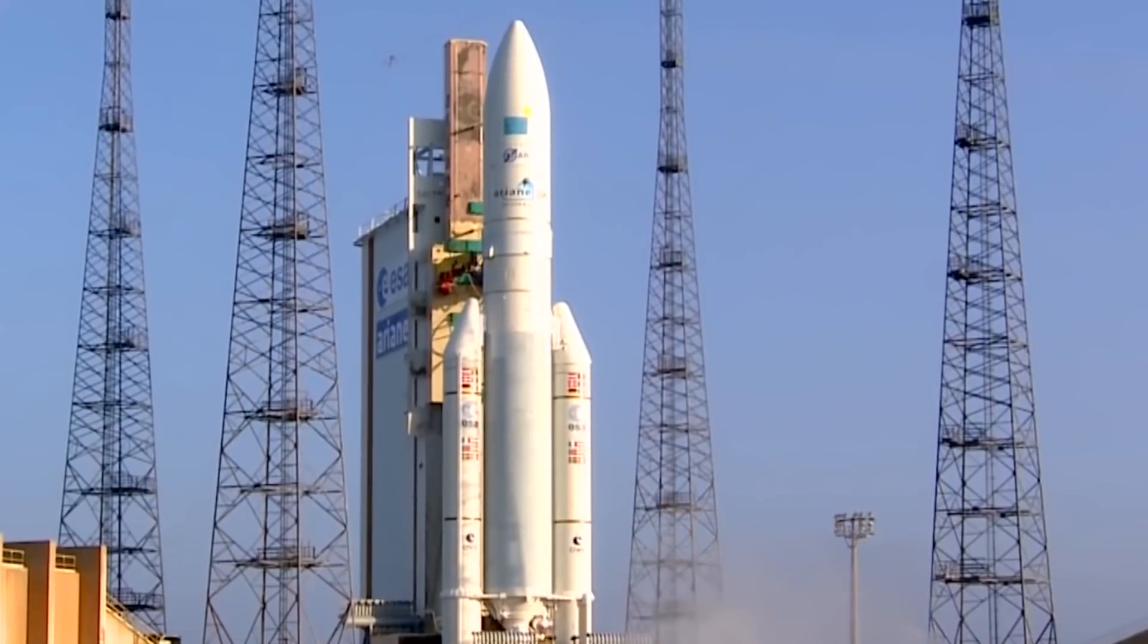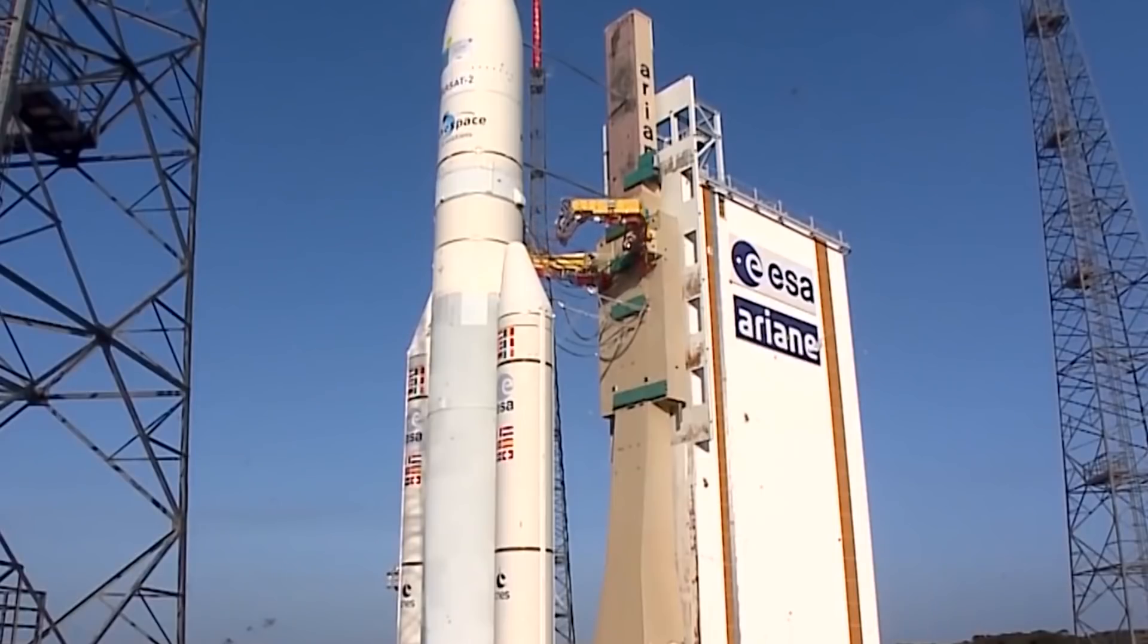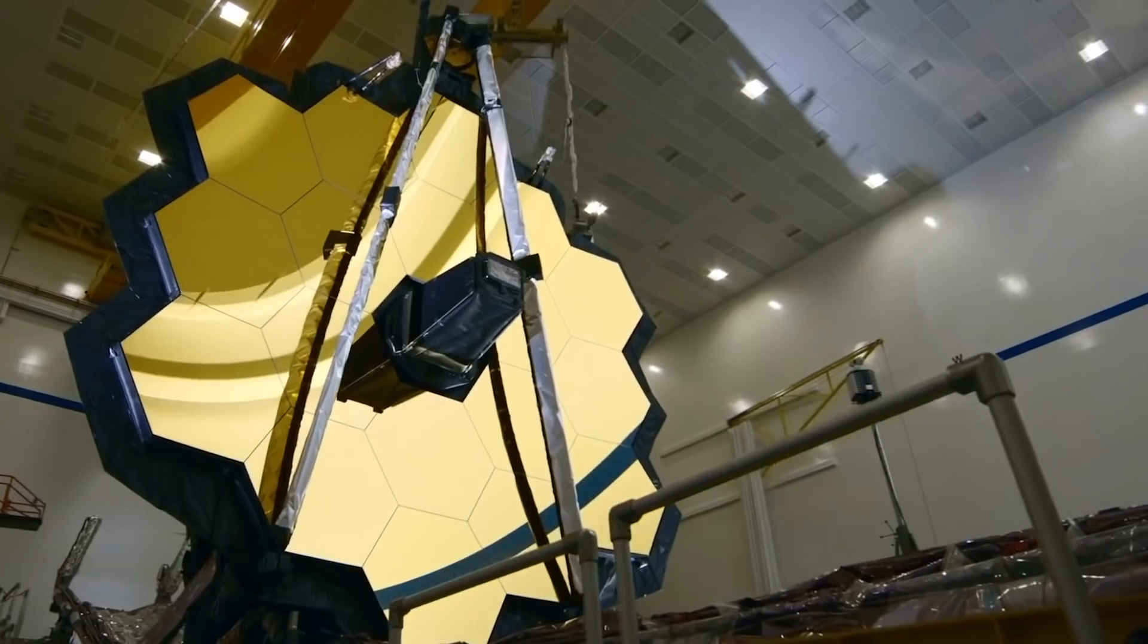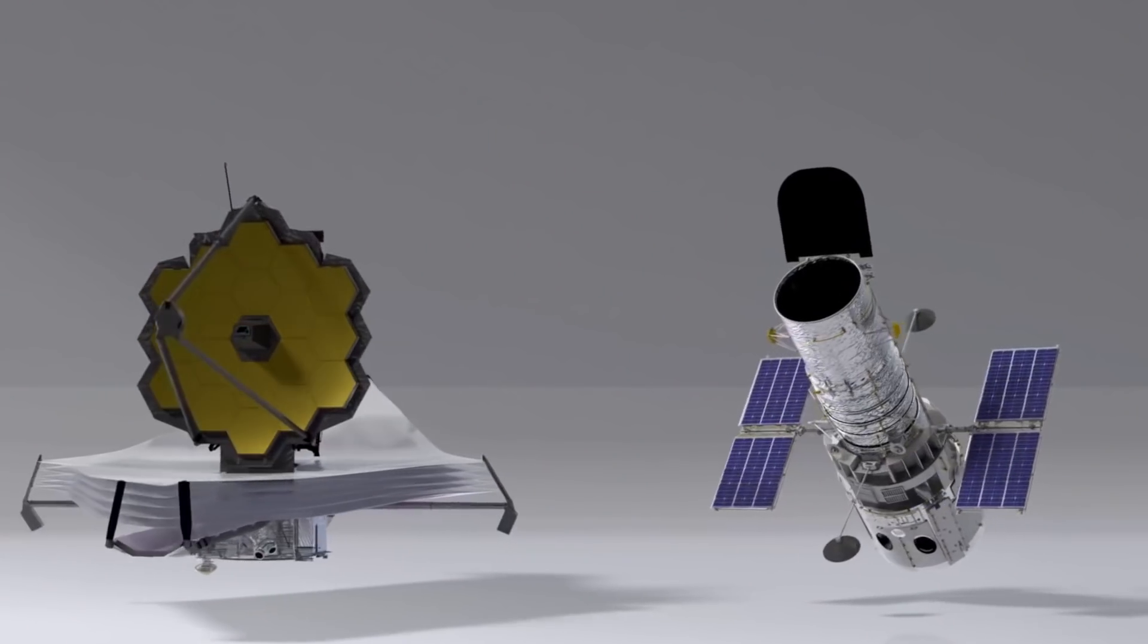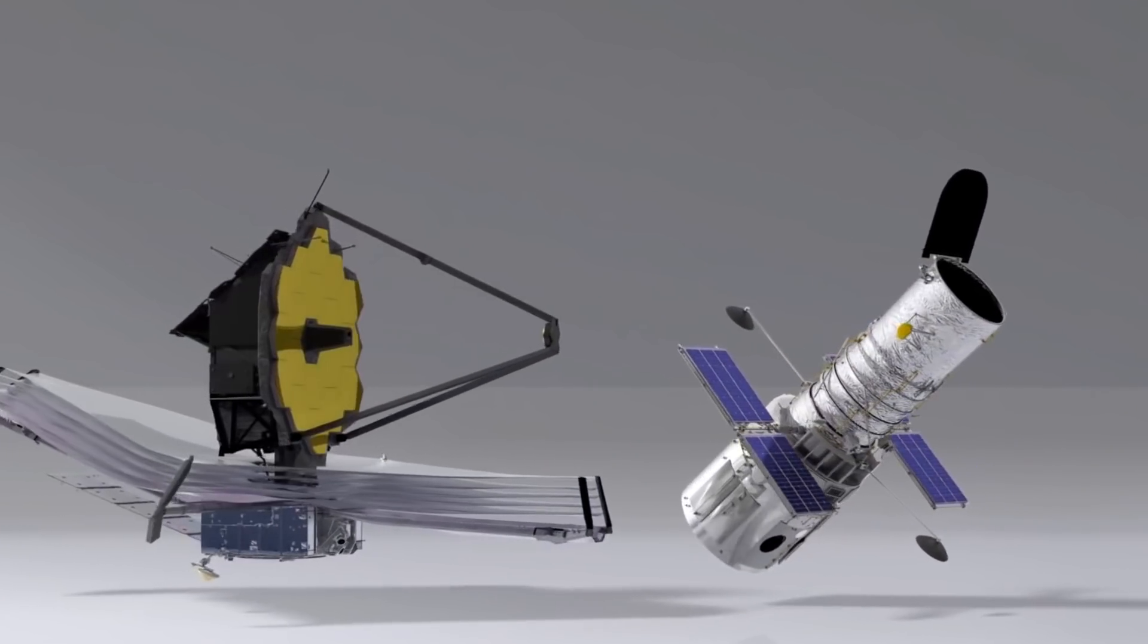When it comes to LUVOIR-B, which was designed to launch on a heavy lift rocket with an industry-standard 5-meters or 16-foot diameter launch fairing, lifetime cost estimates range from $12 billion to $18 billion.